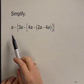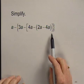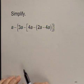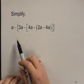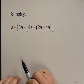In this problem, we're going to simplify an expression using the rules for order of operations and combining like terms. We have an expression that contains several sets of grouping symbols. So we're going to simplify by beginning with the innermost set of grouping symbols.